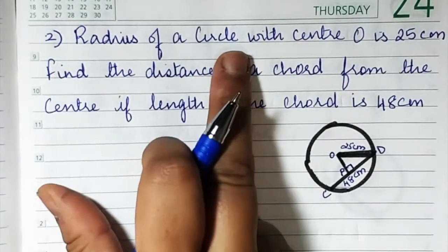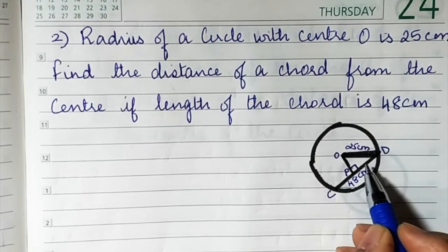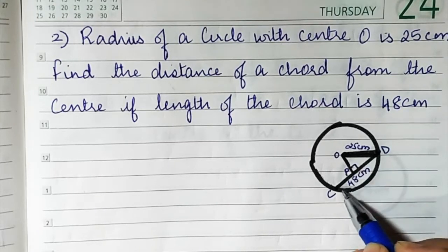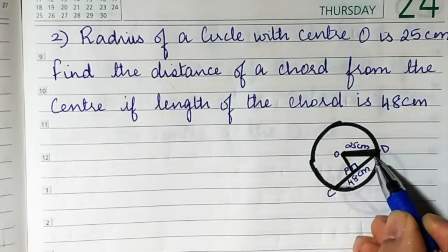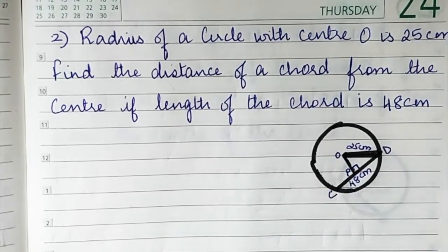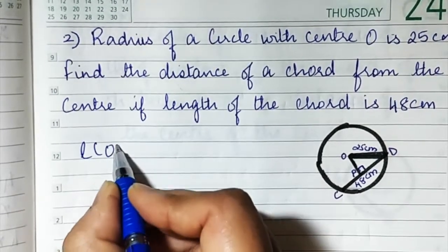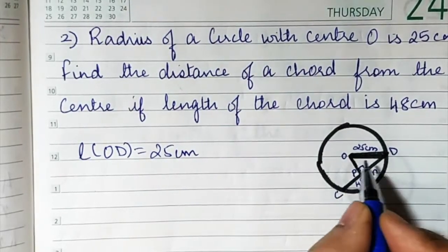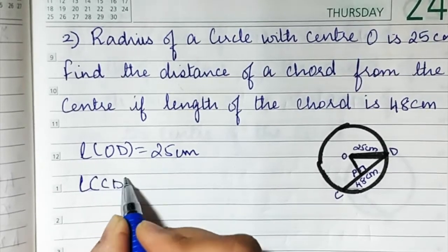Sum number two: the radius of a circle with center O is 25. Find the distance of the chord from the center if the length of the chord CD is 48. So what is given: length OD is 25 centimeters — that's the radius — and length CD is 48 centimeters.